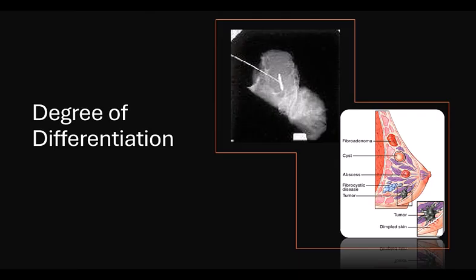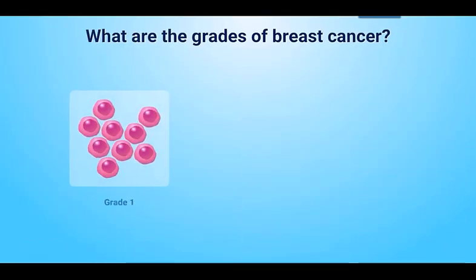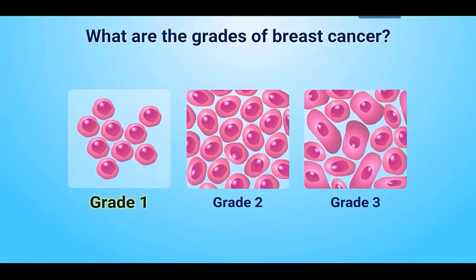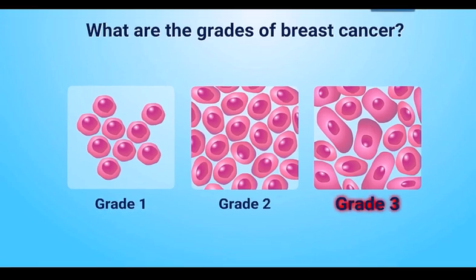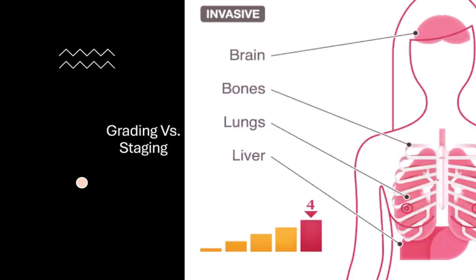Differentiation refers to the degree of resemblance a cancer has to its tissue of origin. A well-differentiated cancer still resembles the tissue it arose from, while a poorly differentiated or undifferentiated cancer does not resemble the cell of origin. Grading indicates how aggressive a tumor may be. Grade I equals well-differentiated, least aggressive. Grade II equals moderately aggressive. Grade III equals more aggressive. Grade IV equals undifferentiated, most aggressive.